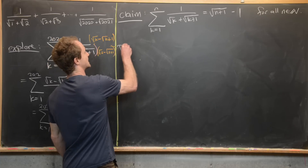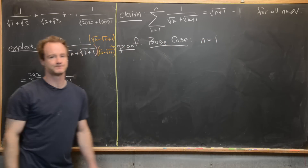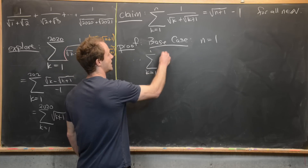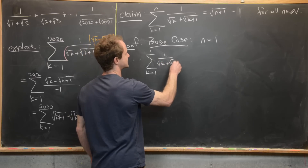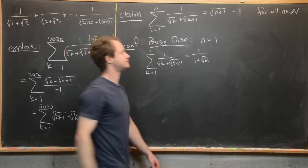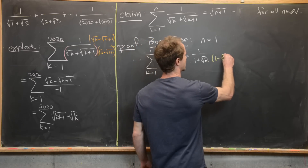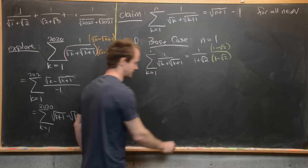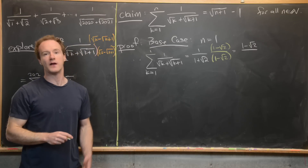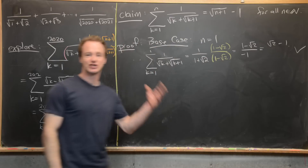The base case is n=1. The sum is 1/(1 + √2). Rationalizing by multiplying by (1 - √2)/(1 - √2) gives numerator 1 - √2 and denominator 1 - 2 = -1, so the result is √2 - 1, which equals √(1+1) - 1. The base case is verified.